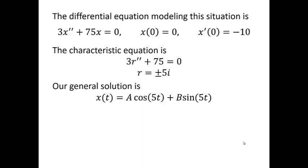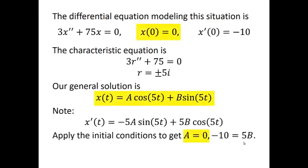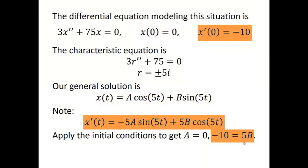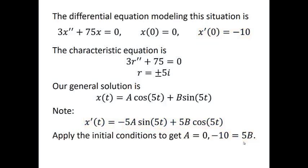Before we apply our initial conditions, it'll be helpful to have a formula for that derivative. So x prime of t is minus 5A sine of 5t plus 5B cosine of 5t. Now we apply our initial conditions. The fact that x of 0 is 0 tells us that A is 0. And the fact that x prime of 0 is negative 10 tells us that negative 10 is 5B. So A is 0 and B is negative 2. And hence our position function x of t is negative 2 sine of 5t.